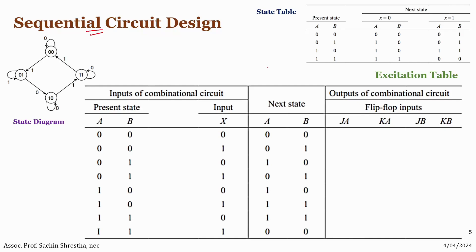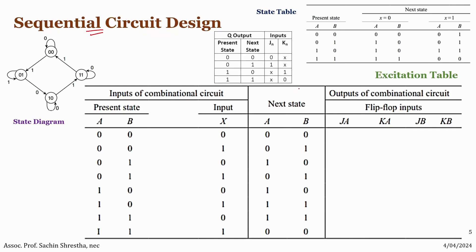If we have the excitation table of the JK flip-flop beforehand, it will be a lot easier. The state is defined by two bits A and B, so for each individual bit we need a JK flip-flop. For A we need a JK flip-flop with inputs JA and KA, and likewise for B with inputs JB and KB.